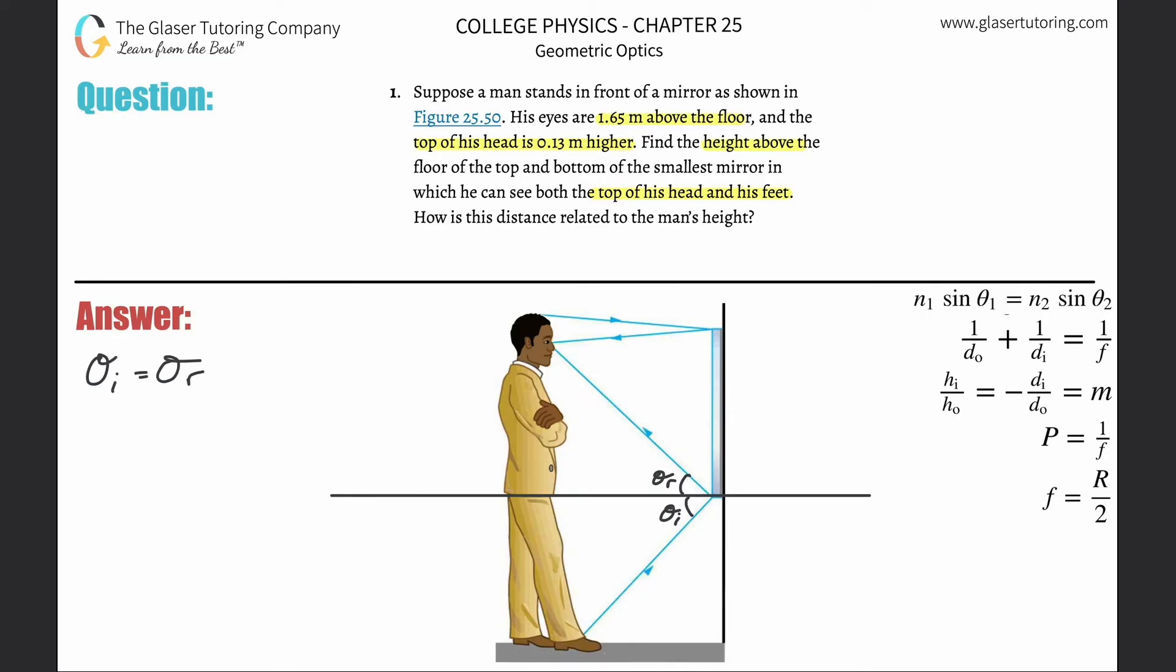Now consider this: if I were to create two triangles from his eyes down to the normal and then from the normal down to his feet, if these two angles are equal, then that means the sides opposite to them must also be equal. That means whatever this distance is from the bottom of the floor to the normal is going to be equal to this distance from his eyes to the normal.